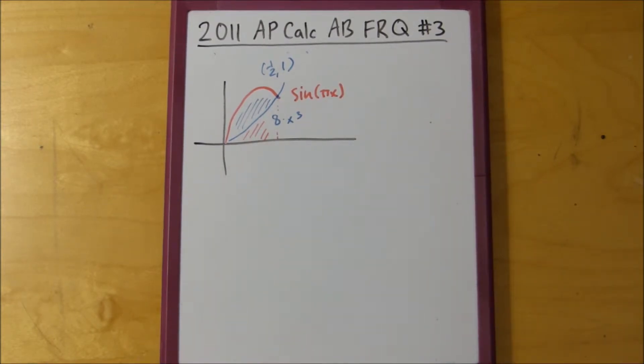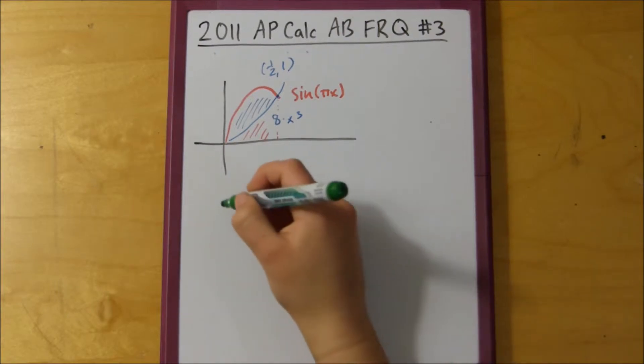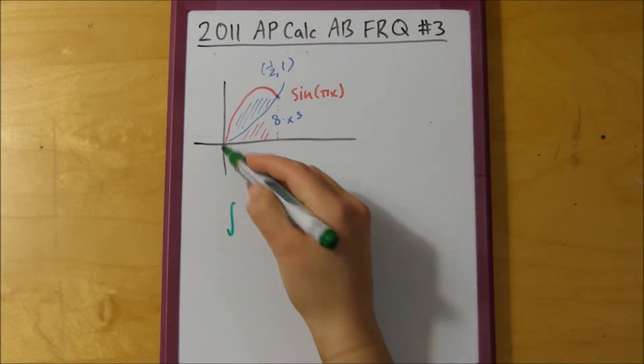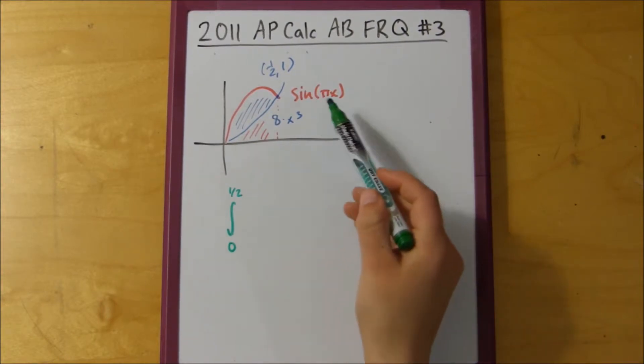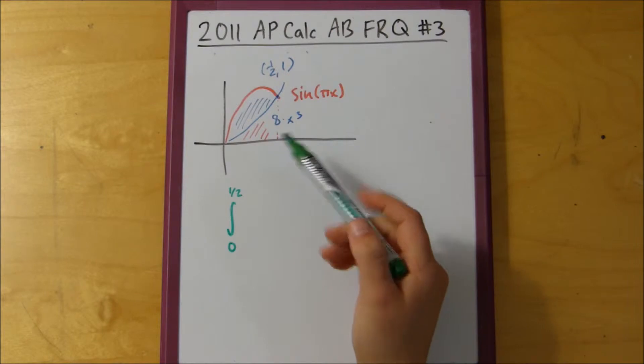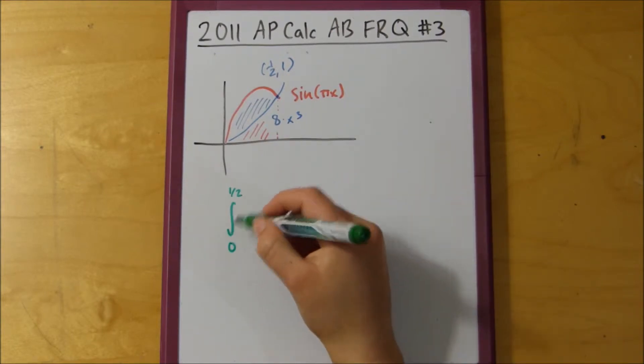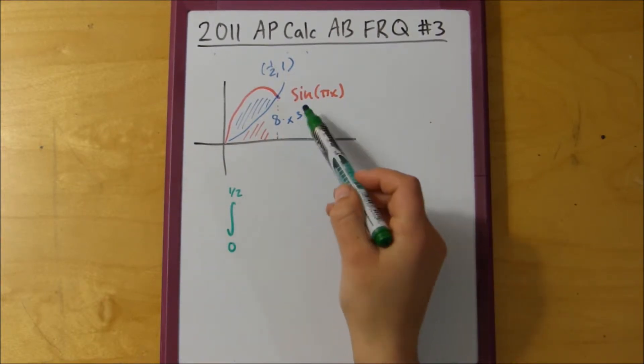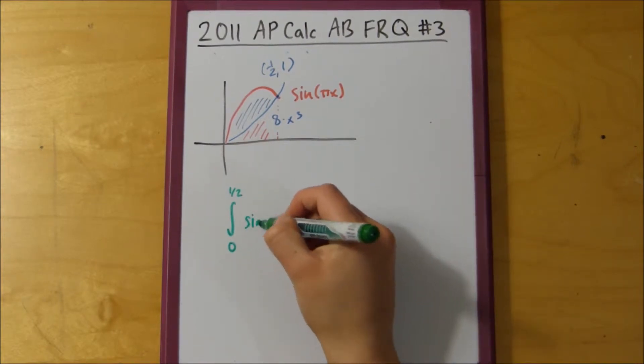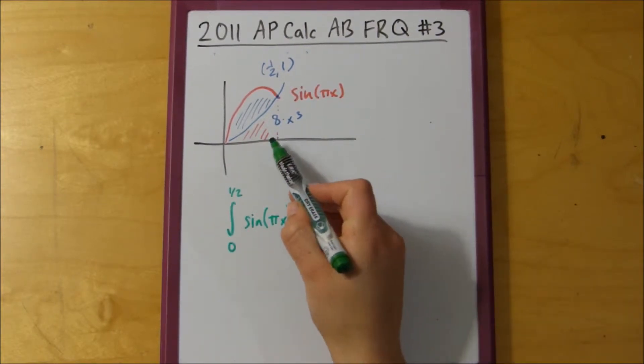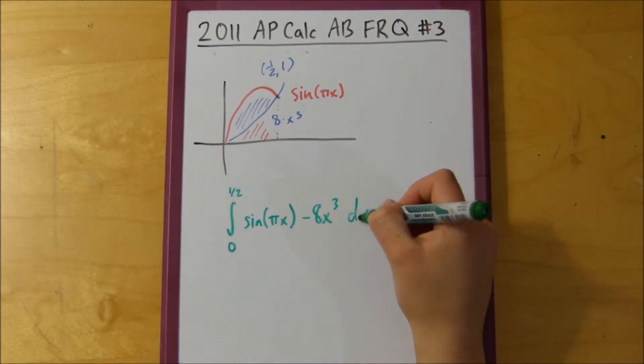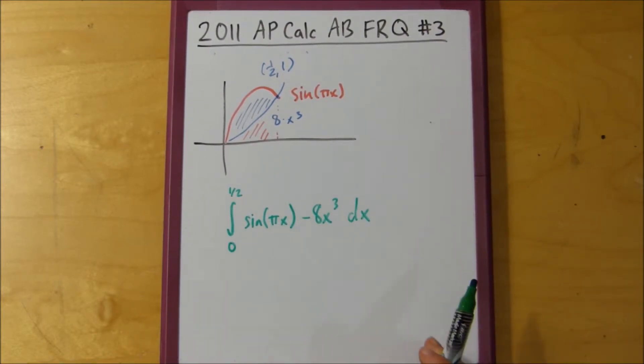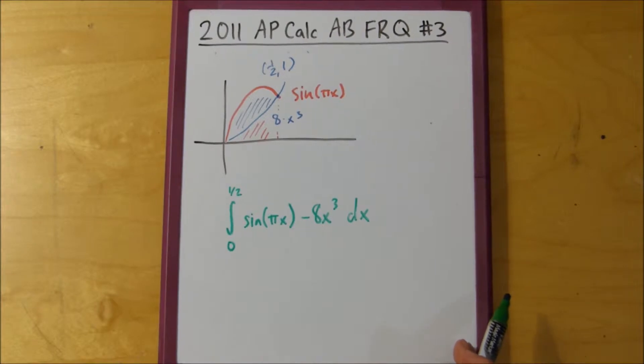So if we set up our integral, we'd say from 0 to 1 half, and we know this is in terms of x because both equations were given to us in terms of x. So 0 to 1 half is our bounds, and then our top equation is sine of pi x, and then our lower equation is 8x cubed, so we put that at the bottom, then dx, and now what we do, since this is a non-calculator problem, is we integrate.